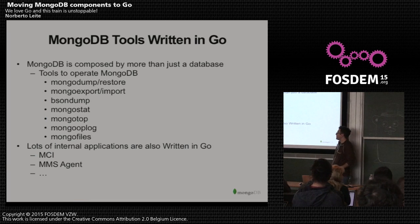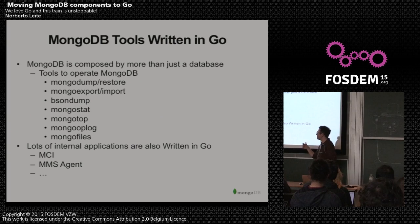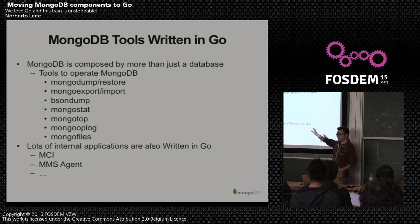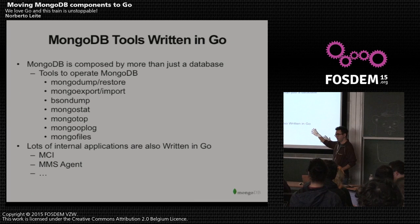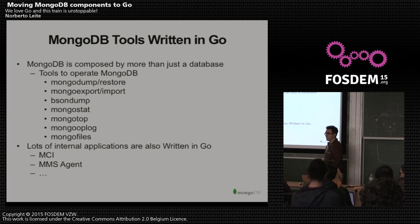Some of these binaries are written in Go from version 3.0 onwards — actually from 2.8 onwards — and all of them have been rewritten into Go. So if you're installing MongoDB, you are installing Go binaries. These are the tools we've rewritten: MongoDump, MongoRestore, MongoImport, MongoExport, BSONDump, MongoStat, MongoTop, MongoOpLog, and MongoFiles.